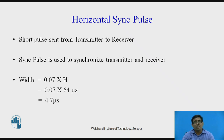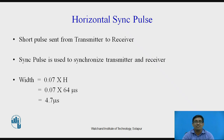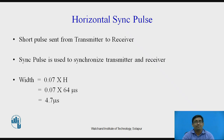The horizontal sync pulse is a short pulse sent from the transmitter to the receiver for synchronization. The synchronization pulse is used for synchronization at both the transmitter and receiver. The width requirement formula is 0.07 × H. With H equal to 64 microseconds, we get 0.07 × 64 = 4.7 microseconds.